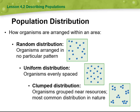First, random distribution means that organisms are arranged in no particular pattern, as you can see from this image. Moving to the second type, uniform distribution means organisms are evenly spaced out — as you can see here, they are evenly spaced between each other.